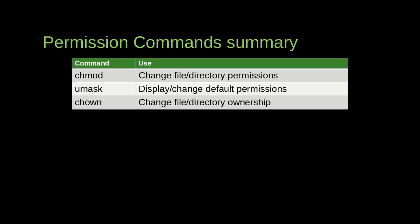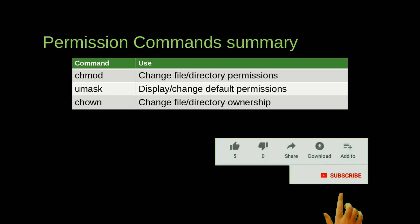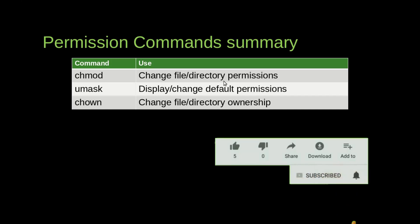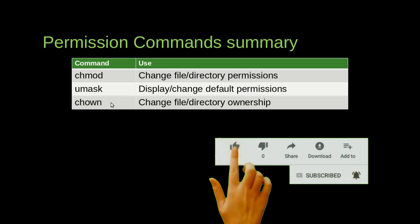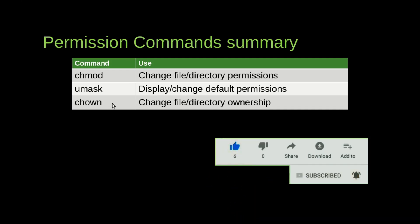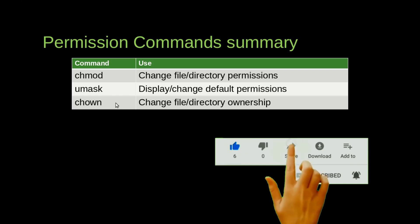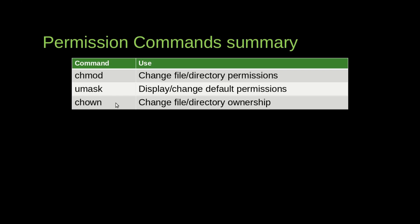Hello and welcome to this next tutorial on shell scripting. In this tutorial we are going to study important commands in a shell: chmod, which is used for changing file or directory permissions; umask, used to change the default permissions; and chown, which is used to change the ownership of a file.